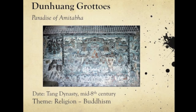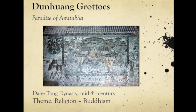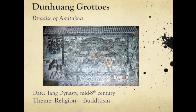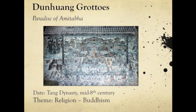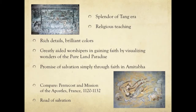Dunhuang, the westernmost gateway to China on the Silk Road, had long been a Buddhist pilgrimage destination and home to thriving communities of Buddhists. Wall paintings of Dunhuang, including Paradise of Amitabha, made in the mid-8th century, have both religious and aesthetic values. This richly detailed, brilliantly colored picture steeped in the opulence of the Tang dynasty aided worshippers in gaining faith by visualizing the wonders of Pure Land Paradise.